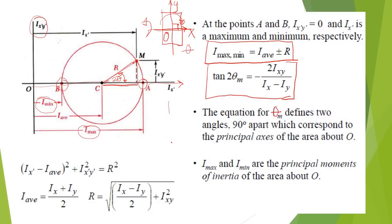Just for clarity: this is Y and this is X, and take note this angle is 90 degrees. When plotted on the Mohr circle, X and Y correspond to 180 degrees — twice the principal axis angle of 90 degrees. Our I_max and I_min are the principal moments of inertia about point O.